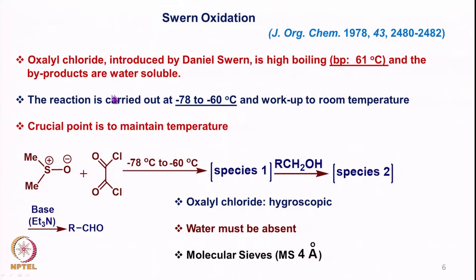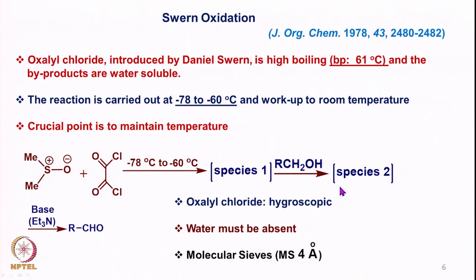Now looking at Swern oxidation, where oxalyl chloride is used to activate DMSO. Oxalyl chloride has a high boiling point of 61°C and the byproducts are water-soluble. The reaction was reported in 1978 and is carried out at −78 to −60°C, with workup at room temperature. Maintaining the temperature is crucial. When DMSO reacts with oxalyl chloride at −78°C and is slowly brought to −60°C, species 1 forms, which reacts with the alcohol to form species 2, and then triethylamine gives the corresponding aldehyde.